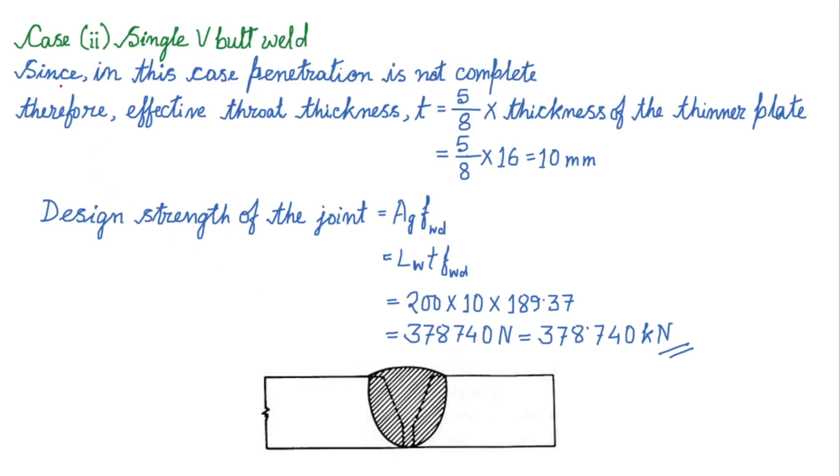Next case number 2, here we have to take the joint as a single V butt weld. Unlike the previous case, here the two plates have been joined and their edges have formed one single V. So in this case the welding is to be performed from one side. See we have performed the welding from the top side only.